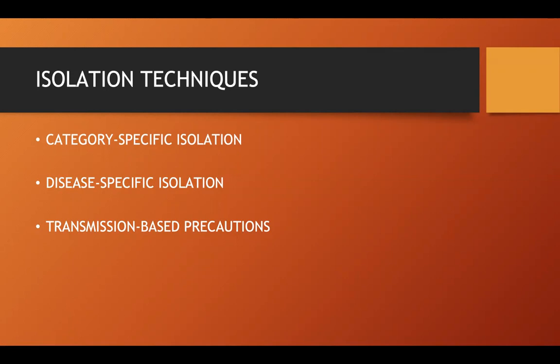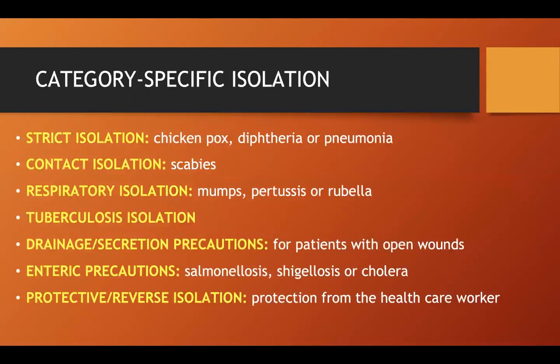Isolation may be done in three ways: category-specific isolation, disease-specific isolation, and transmission-based isolation. Let's check out each of those mentioned types of isolation.